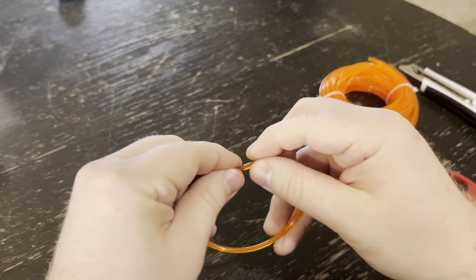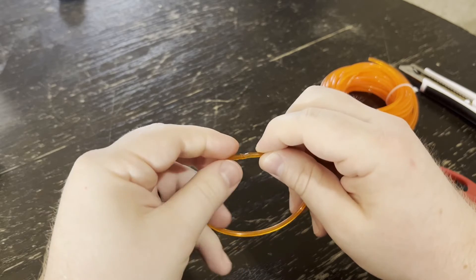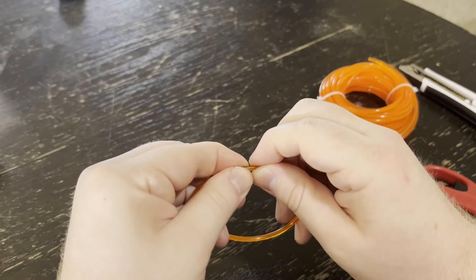So again, do that being careful to not burn yourself. And then you're going to want to keep rolling it around in your fingers until you get the thickness that you need and you've made sure that the joint is cooled.